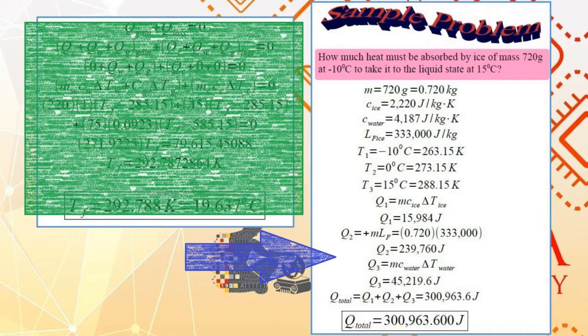The total heat needed, therefore, is Q1 plus Q2 plus Q3. And we are thus able to calculate Q total.